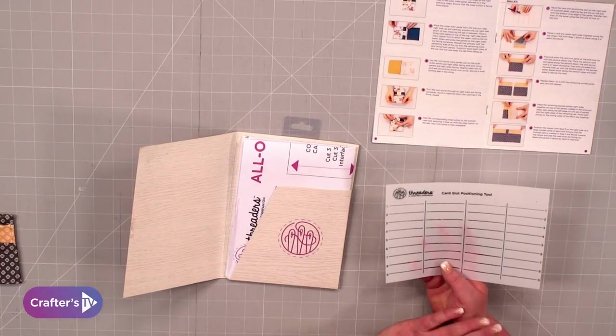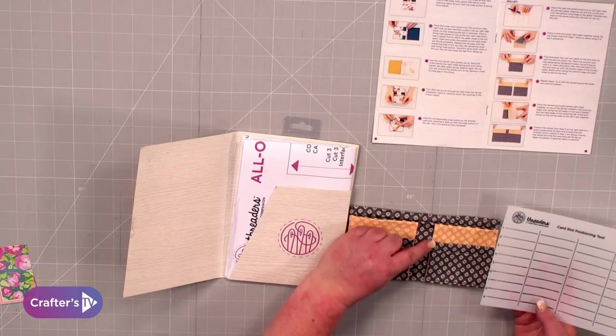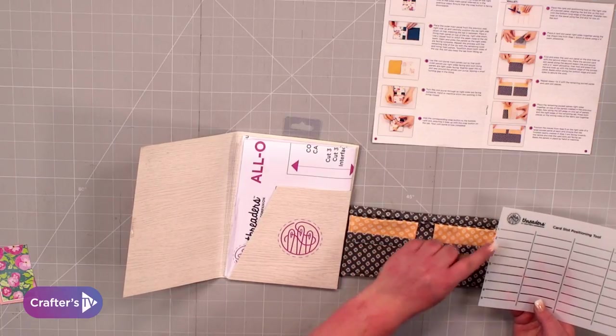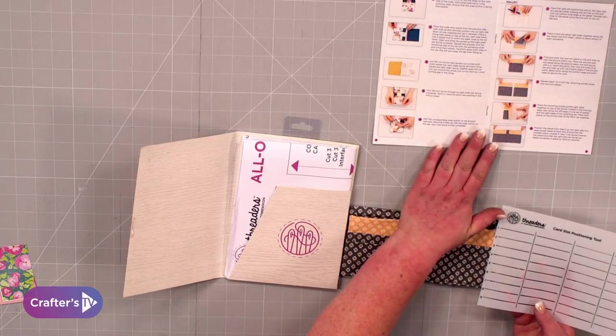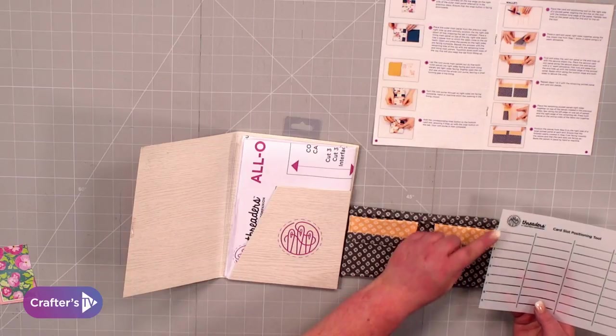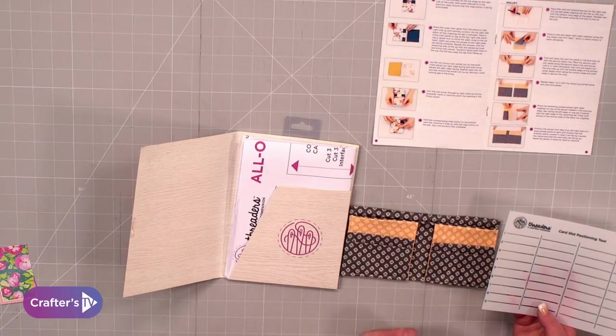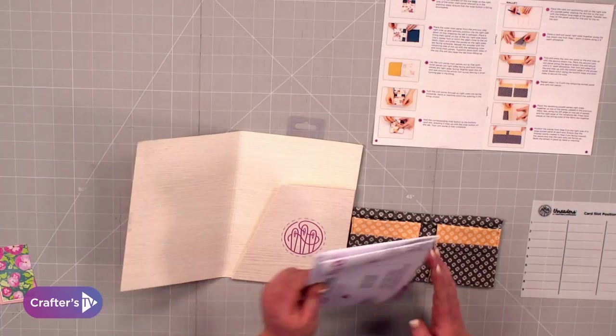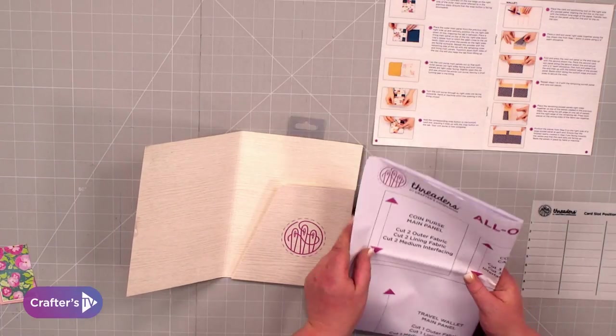The other thing we need is this positioning tool. This is going to help us move those card slots to the correct position by the guide. The instructions will tell us which line, numbered one to nine, to line up and how to stitch them.